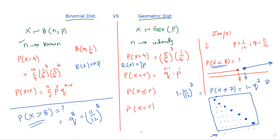Student: If the condition were P(X ≥ 8), would we use q^7? Instructor: Yes, that would be correct. That concludes this session comparing the binomial and geometric distributions. Thank you.